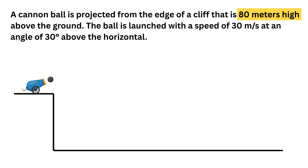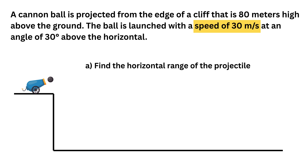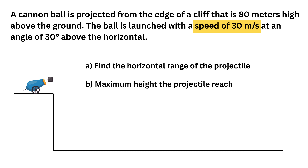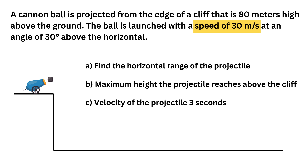We are given an initial position and initial velocity of a projectile and a bunch of questions that test our understanding of kinematics in two dimensions. We need to find the horizontal range of the projectile — the horizontal distance between the cliff and the point where the projectile hits the ground — the maximum height the projectile reaches above the cliff, and the velocity of the projectile at three seconds after launch.